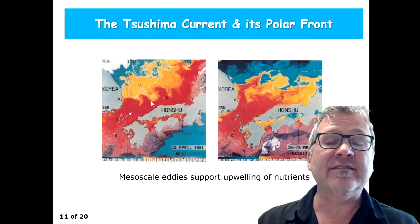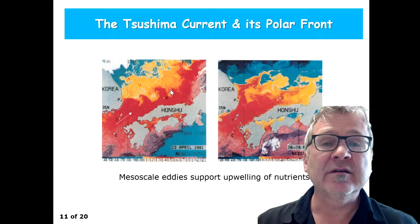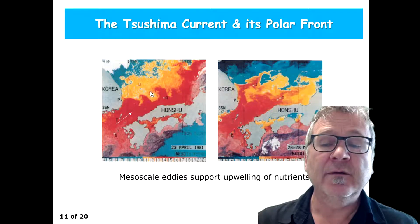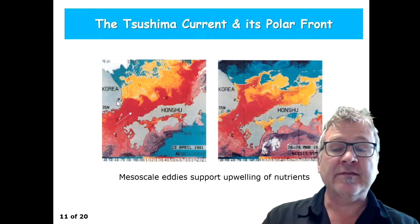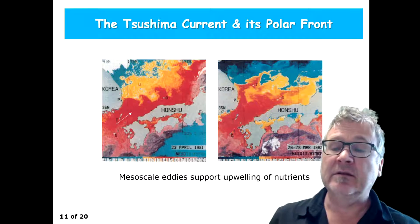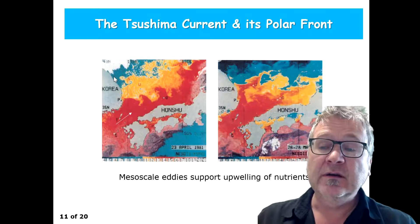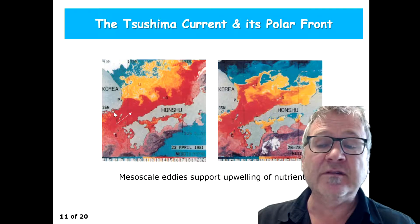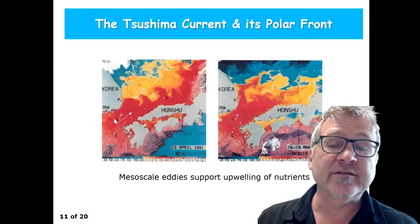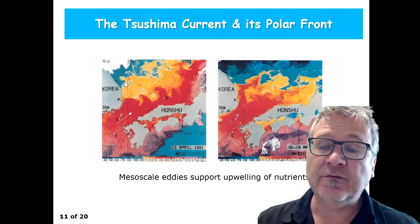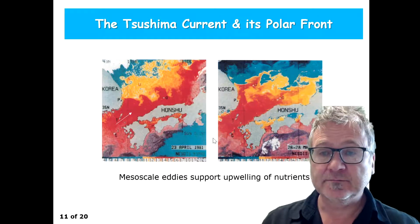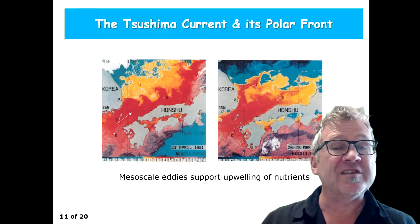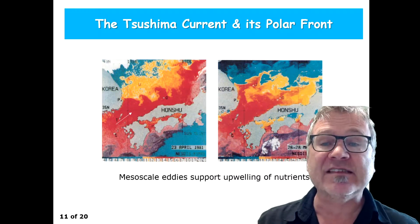These are the eddies that are created in these frontal flows. That's a region — particularly near Korea — where temperature changes are significant, and can be 10 degrees over relatively short distances of a few hundred kilometers. So that's the Tsushima current and its polar front that forms inside the Japan Sea.